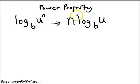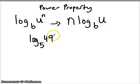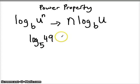And now you've used your power property to rewrite this expression. For example, if we have log base 5 of 49 — now you might say I could use my product property, and you can. In fact, I'm going to do that second just to show you it really doesn't matter. But since we're talking about the power property, let's practice that.